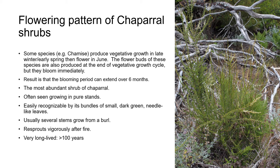Chamise, Adenostoma fasciculatum, is the most abundant shrub of Chaparral. It's often seen growing in pure stands and is easily recognizable by its bundles of small, dark green, needle-like leaves and very upright, stiff stems. These stiff, slender stems usually grow from a burl, and Chamise re-sprouts vigorously after fire. You can see this happening right now at the Bonny Doon Ecological Reserve. Chamise is very long-lived and can live for up to 100 years.